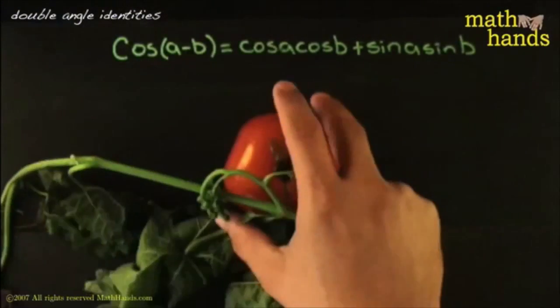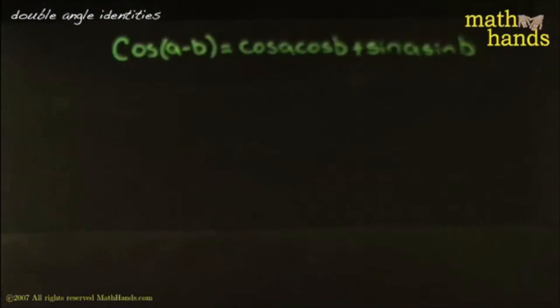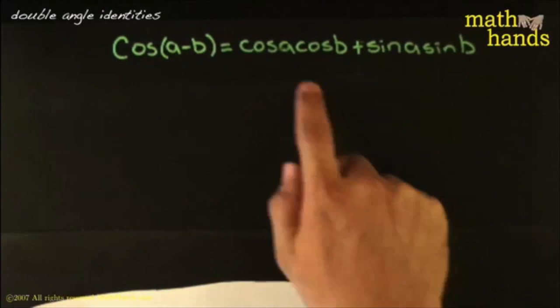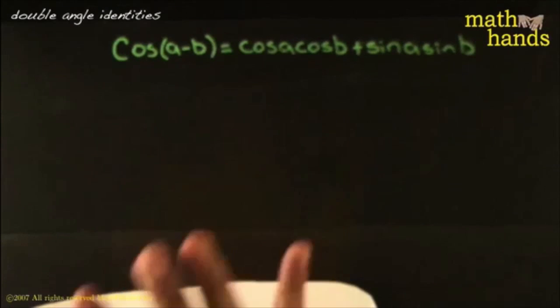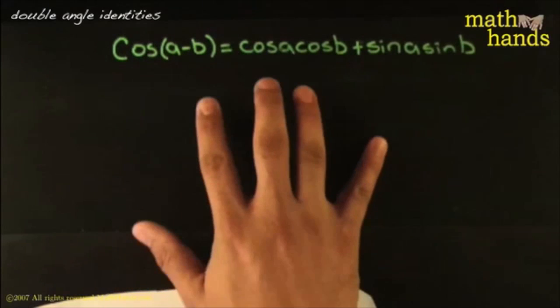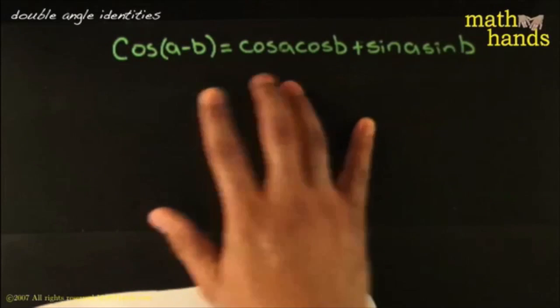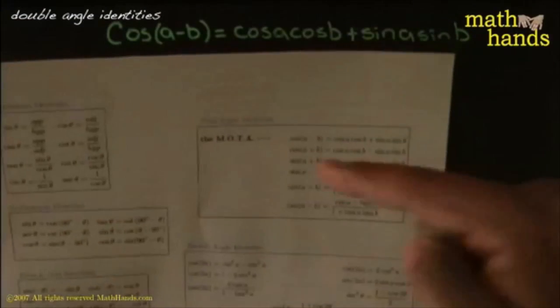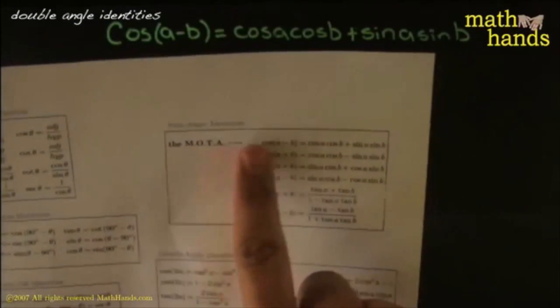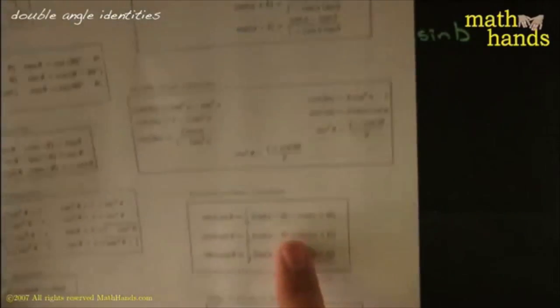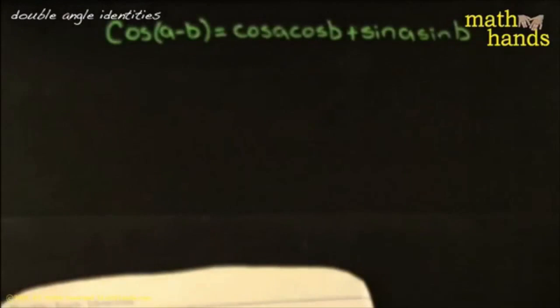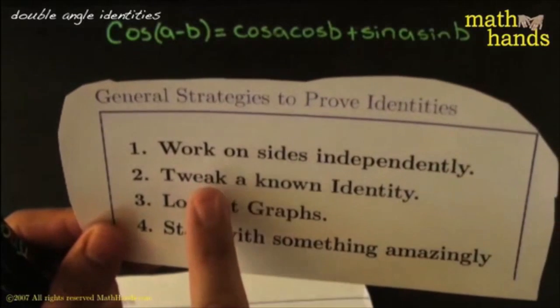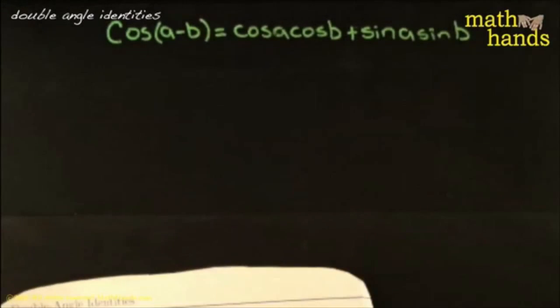It's tomato time again. The idea is, I'll remind you, this identity here, the mother of them all. It's called the mother of them all because it's like a mother tomato plant — it keeps on giving and giving and giving tomatoes. This is the plant, the tomato plant, and these are all the tomatoes we're going to get from it. We're going to get them all by a simple process of tweaking it. Every time you tweak it, you get some more tomatoes.